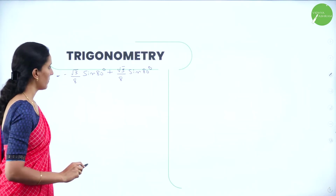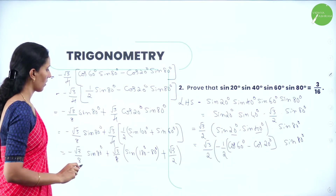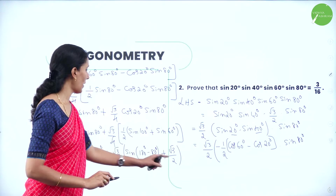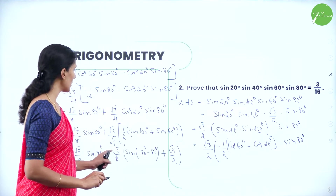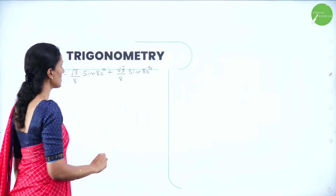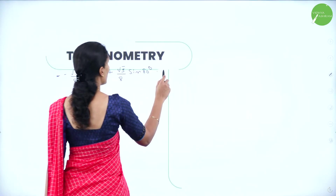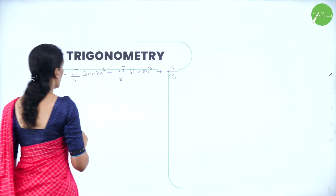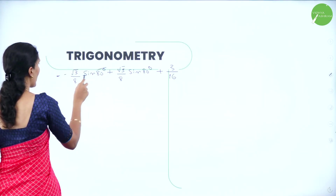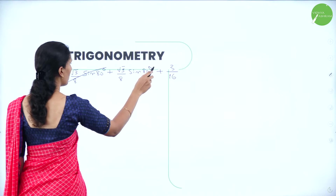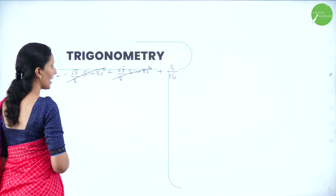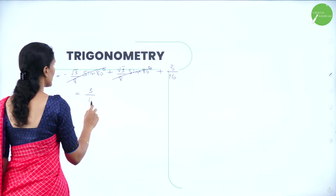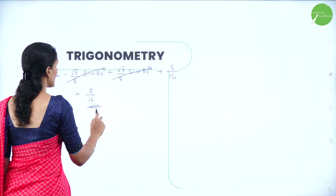So we get: −(√3/8)·sin80° + (√3/8)·sin80° + (√3/8)·(√3/2). The terms −(√3/8)·sin80° and +(√3/8)·sin80° cancel each other. We are left with (√3/8)·(√3/2) = 3/16.